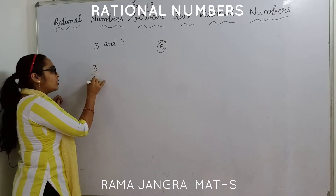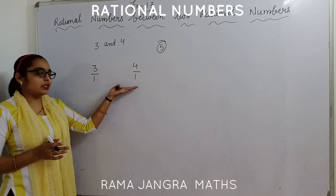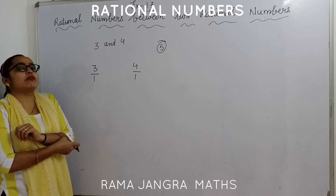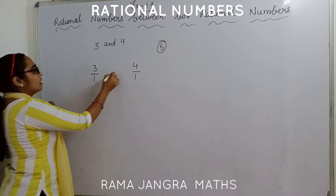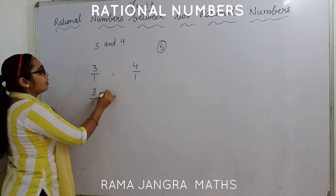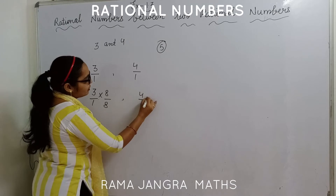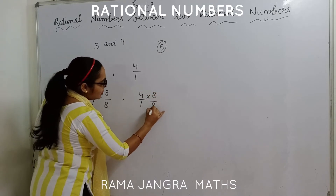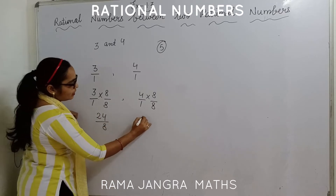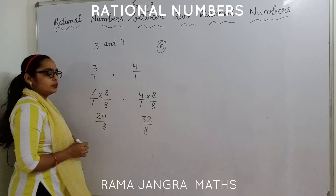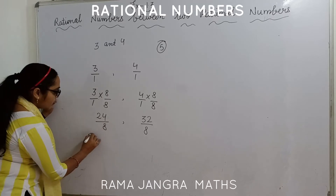Again, you can write it as 4 by 1 and 3 by 1. We can write it like this. Now denominators are same. Now how will you find out the 5? Multiply with any number greater than 5. Suppose I am multiplying with 8. So 4 by 1 multiplied by 8 by 8 gives us 24 by 8 and 32 by 8.